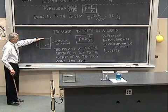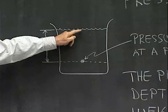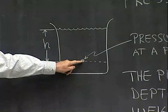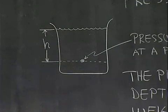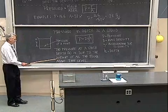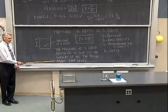Here I have a diagram that shows the depth, h, the distance between the top surface of the liquid and the pressure point in question. Now the pressure at a given depth is due to the weight of all the fluid above that level.